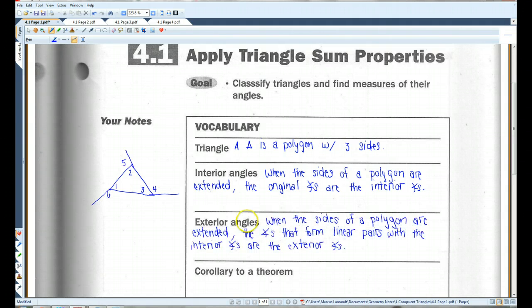Exterior angles. When you extend the lines of a particular polygon, the exterior angles will form linear pairs with the interior angles. So for example, over here, angles 4, 5, and 6 are exterior angles. They're outside the polygon. In this case, it's a triangle.